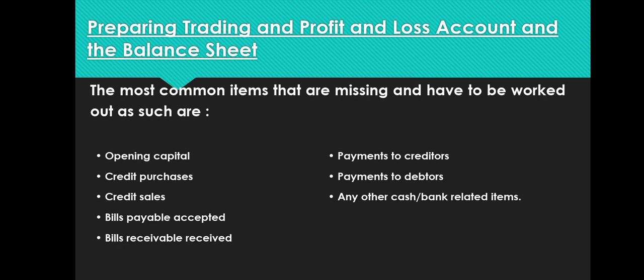In the conversion method, we prepare trading and profit and loss account systematically — converting incomplete records into complete ones. The most common missing items that must be worked out are: opening capital, credit purchases, credit sales, bills payable accepted, bills receivable received, payment to creditors, payment to debtors, and other cash and bank related items.